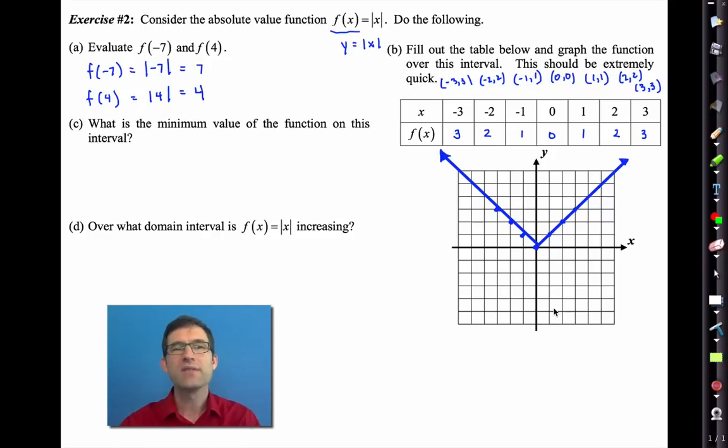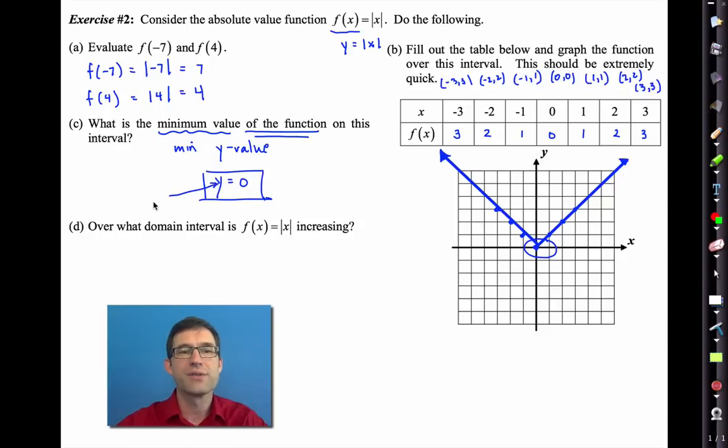Okay let's take a look at letter c. What is the minimum value of the function on this interval? Should be pretty easy. But let's remember some terminology. Minimum value of the function. That's the minimum y value. And of course the smallest y value occurs right down here. And it's y equals 0. Make sure to have that y equals. Okay that way you'll really know that it's y.